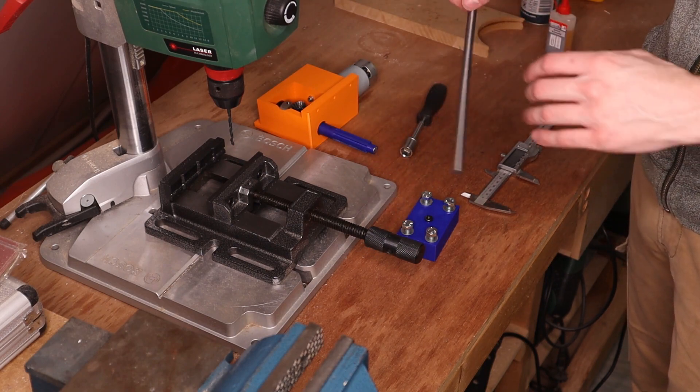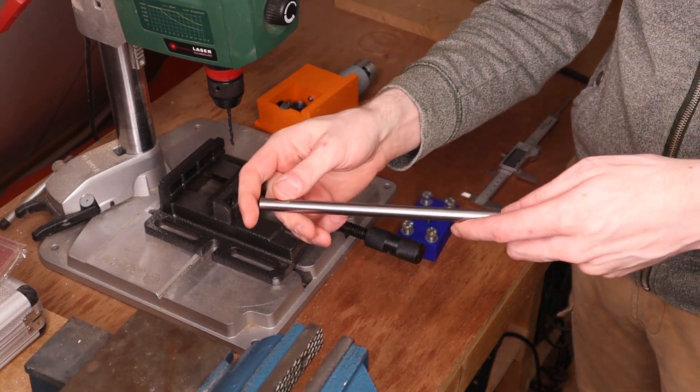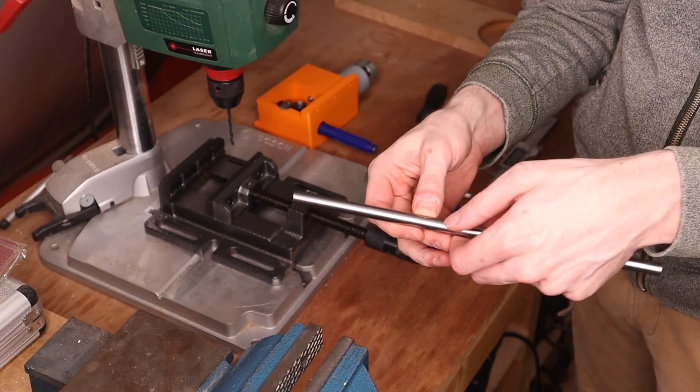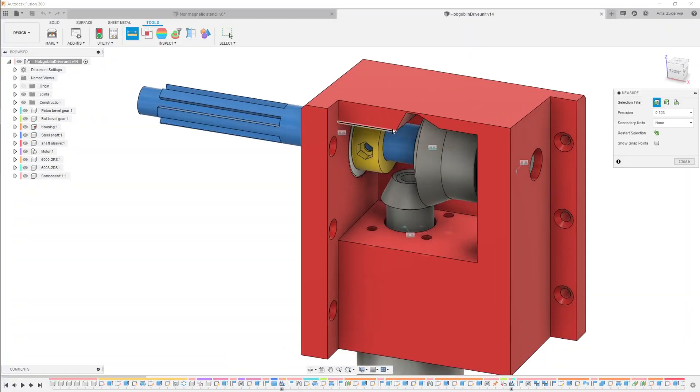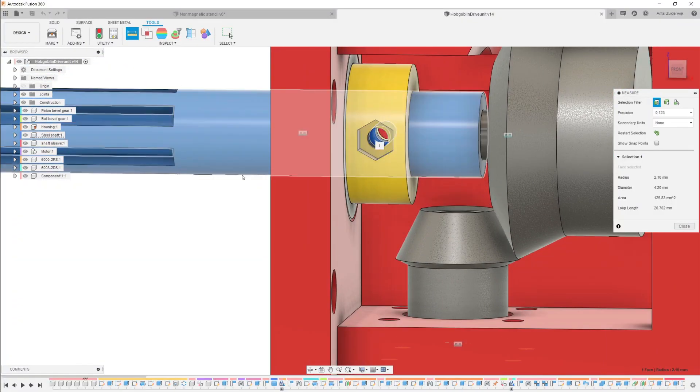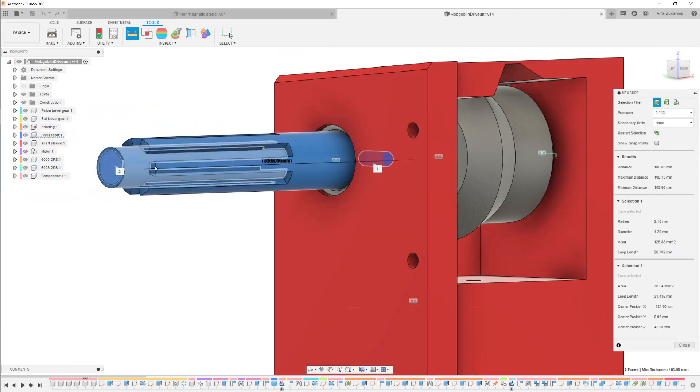One of those parts is a 10 millimeter shaft with a hole drilled through it 106 millimeters from the edge. And I know it needs to be 106 millimeters because the CAD model says so.